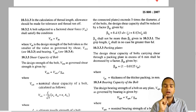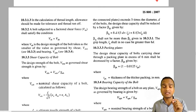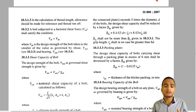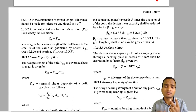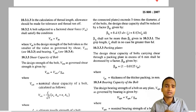You need not memorize these formulas, as IS 800 is typically provided in exams. We will first calculate the shear strength of one bolt, then the bearing strength of one bolt. To calculate the strength of the joint, multiply the minimum of shear strength and bearing strength by the number of bolts.